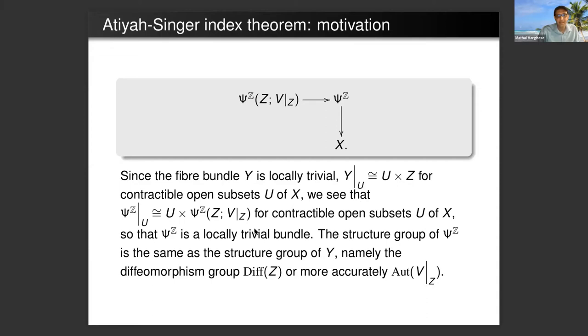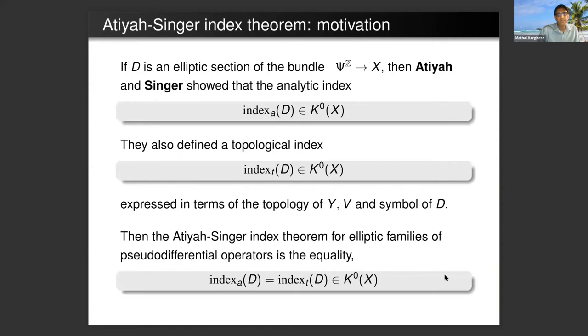Since the fiber bundle is locally trivial, you can use the local trivialization to get a local trivialization of the bundle of pseudodifferential operators. And the structure group is essentially diffeomorphism group of Z, or since it's got coefficients in V, it's the automorphisms of the vector bundle. If D is an elliptic section of this filtered algebra of pseudodifferential operator bundle, then Atiyah-Singer showed that the analytic index is an element of the K-theory of X.